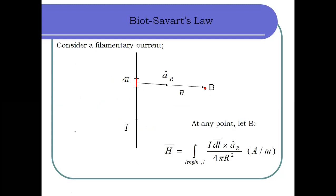Now we're going to proceed with the application of Biot-Savart's law with respect to different types of field sources. We start with the case of line current. In this example, we are going to formulate the equations for the H field intensity due to line current. If we have a line current like this, we have a current I in the upward direction, and a small element of current DL.